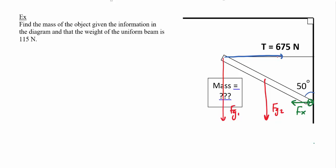I don't know the beam's length, so I'll call it D. The rope and mass attach at the end (distance D from pivot), and the beam's center of mass is at D/2. Breaking fg1 into perpendicular and parallel components: I go perpendicular to the beam first, then complete the triangle with the parallel component. The same is done for fg2 and for tension — tension's perpendicular and parallel components point in the opposite sense.